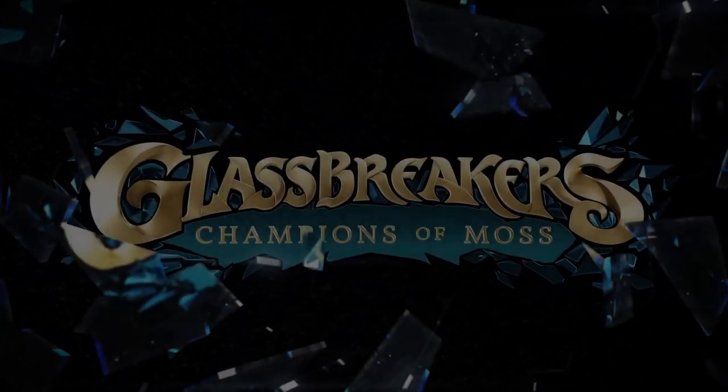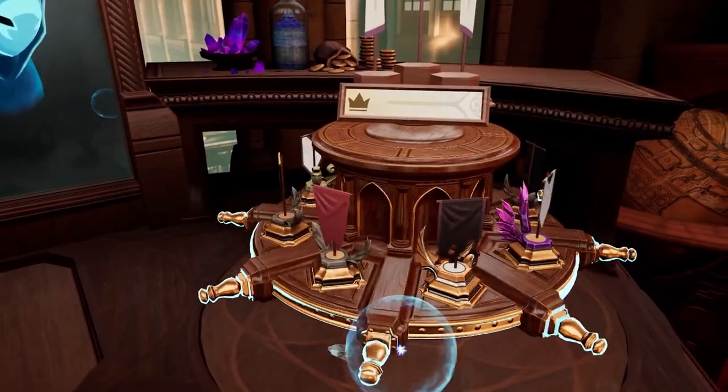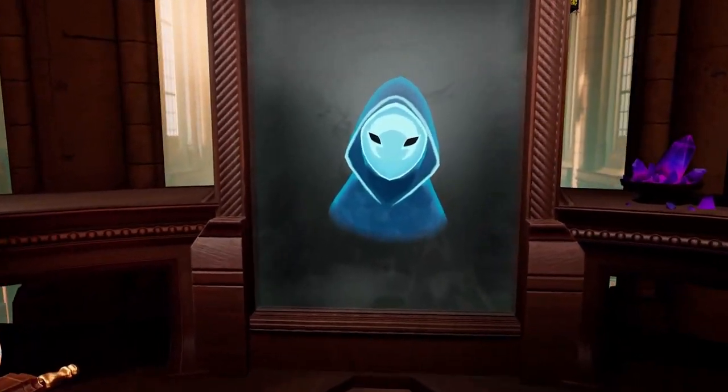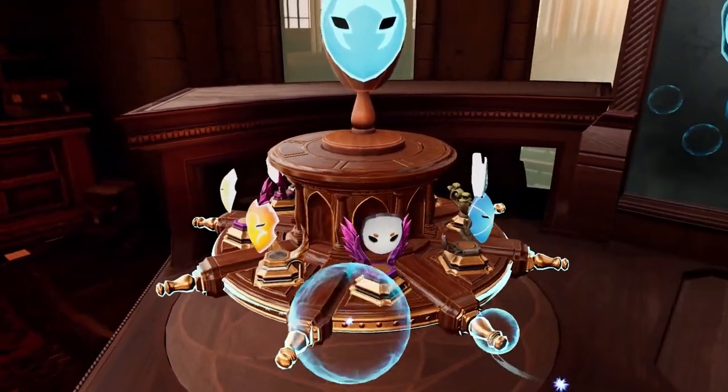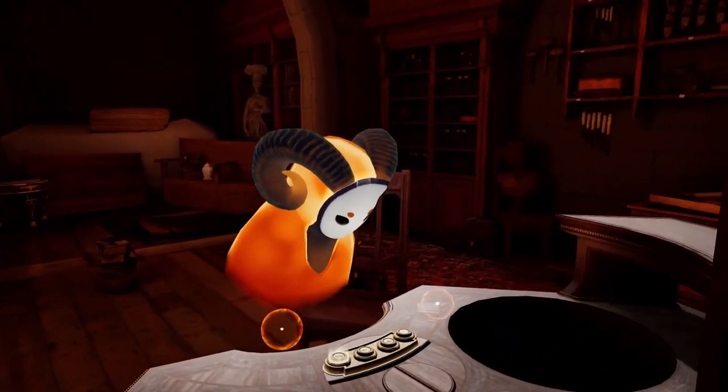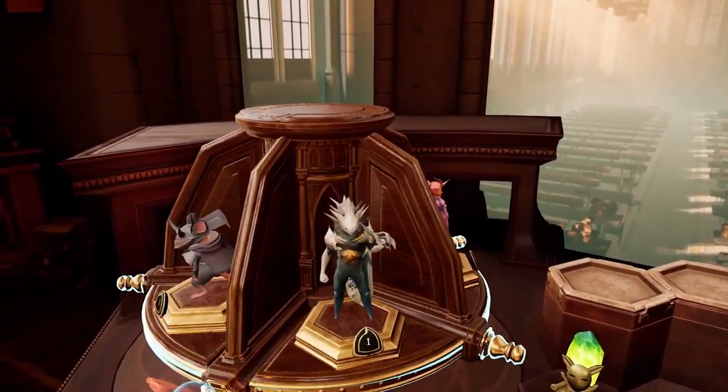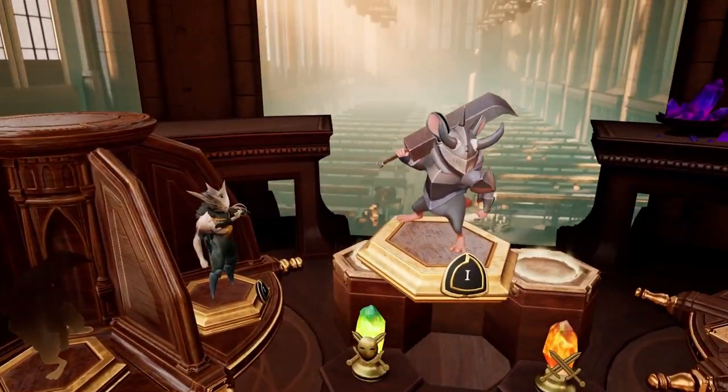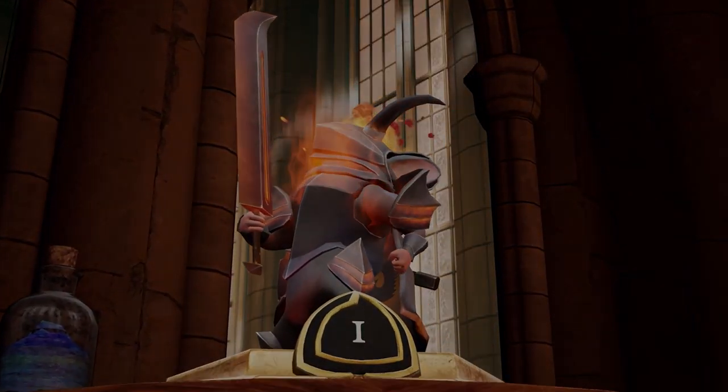Next up is Glass Breakers. In this game you choose your combination of champions from a growing roster of the most heroic, villainous and notorious inhabitants of the world of Moss. Each champion has their own unique abilities that will complement the others in your squad. You can also customize your squad's swagger to make them distinctly your own. Once you've assembled your squad you can battle against friends in private games or match with similarly skilled players in the Glass Breakers community.